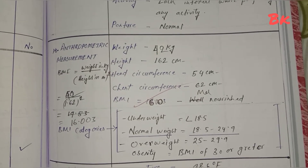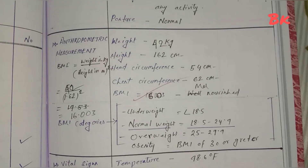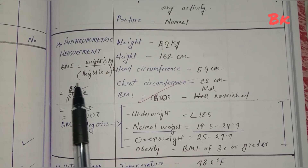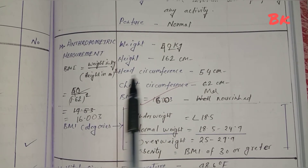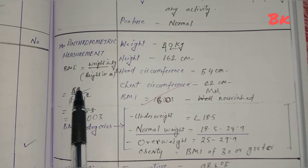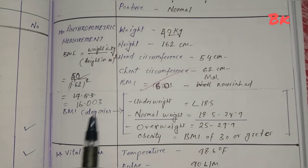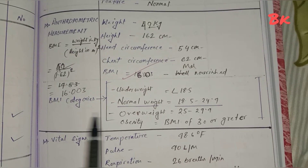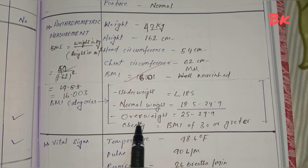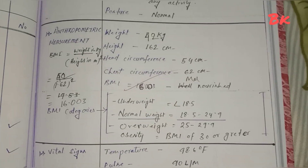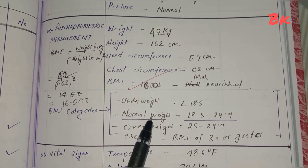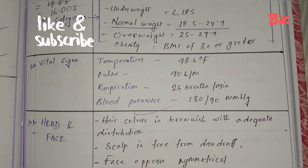Anthropometric measurements: weight 42 kg, height 162 cm, head circumference, chest circumference. BMI — body mass index — formula is weight in kg divided by height in meters squared. Height 162 cm converts to 1.62 m; so 42 divided by 1.62 squared equals 16.003. BMI categories: underweight less than 18.5, normal weight 18.5–24.9, overweight 25–29.9, obesity BMI more than 30. Since BMI is 16, the patient falls under the underweight category.